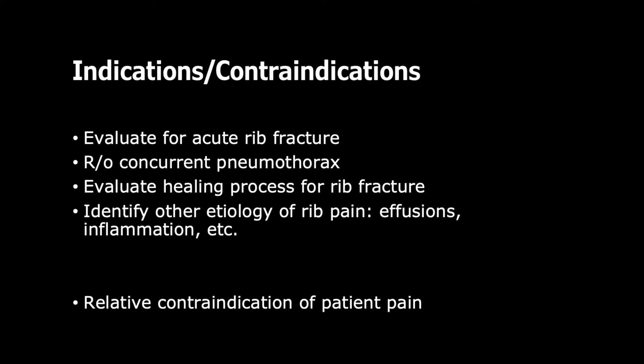Some indications for using ultrasound in this scenario: you can evaluate for acute rib fracture and actually see the fracture. Importantly, you can also rule out a concurrent pneumothorax. If this is farther out than two days, you can also evaluate the healing process — is it healing and how well? You can also identify other etiologies of rib pain. If there's no fracture, no pneumothorax, what about an effusion or inflammation? You can see all of these things with the right training on point-of-care ultrasound.